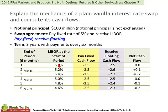LIBOR at the start of the period is 5%. A key feature is that when we first start the swap, the counterparty who's paying floating knows what they're going to pay in six months. So if LIBOR is 5% at the start of the swap, we can call that time zero.